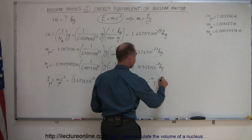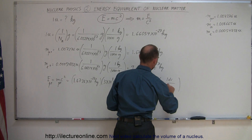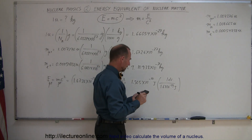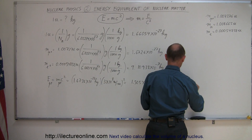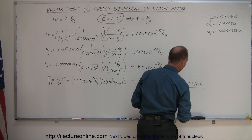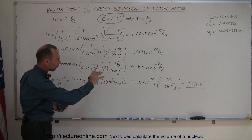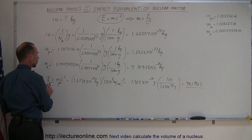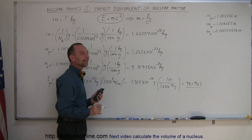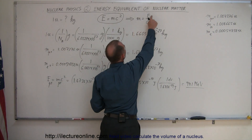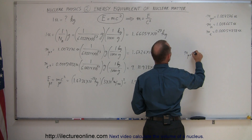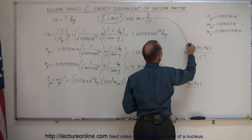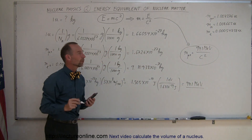Now, if we convert that to electron volts — dividing by 1.6×10⁻¹⁹ joules per electron volt — we get approximately 941 MeV. That's slightly higher than the accepted value because we didn't use the most accurate numbers. This gives you an idea of how we convert the mass of a proton to its energy equivalence in MeV. So the mass of a proton can be written as 941 million electron volts divided by c squared.